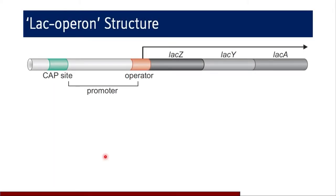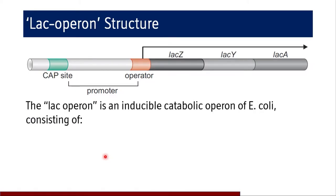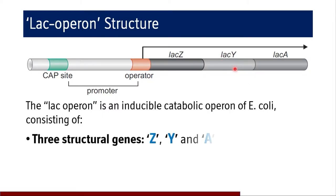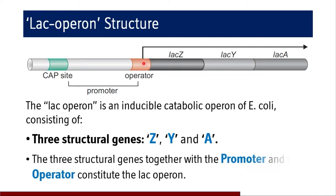The lac operon is lactose operon — an inducible catabolic operon of E. coli which consists of three structural genes, namely lac Z, lac Y, and lac A. Along with these three genes, there is one operator site, a promoter site, and a CAP binding site. The lac operon structure is only constituted by the promoter, operator, and these three structural genes Z, Y, and A. The CAP site is shown in the structure but does not comprise the lac operon structure itself.